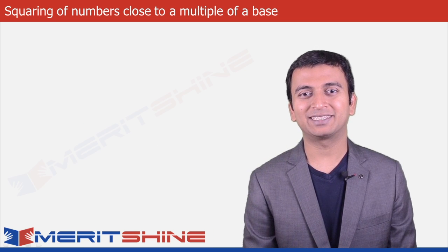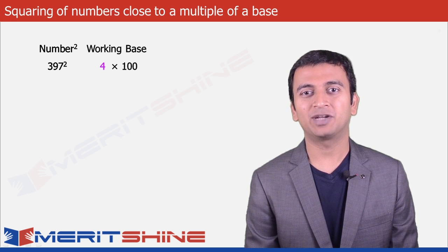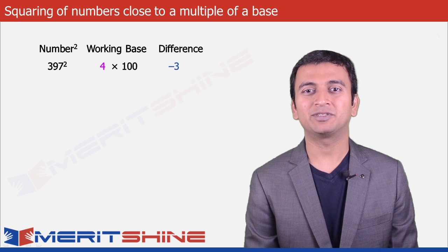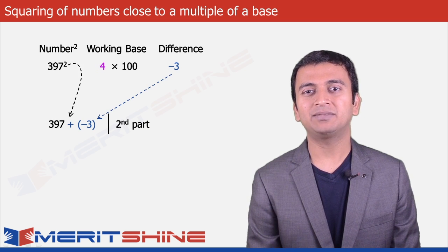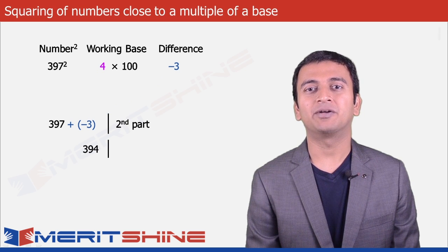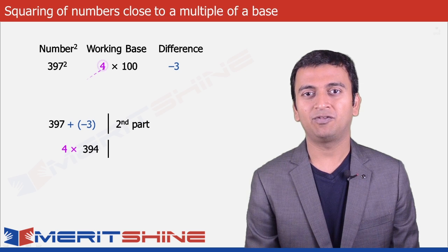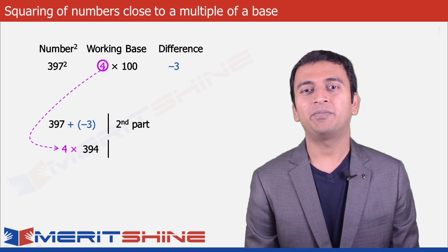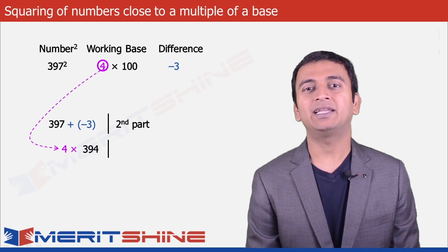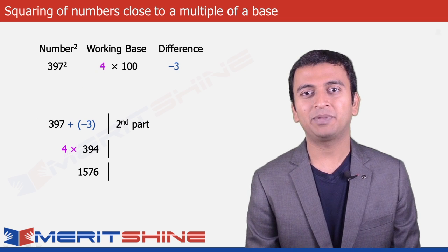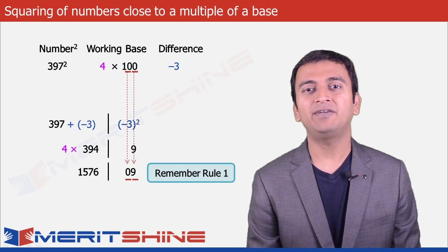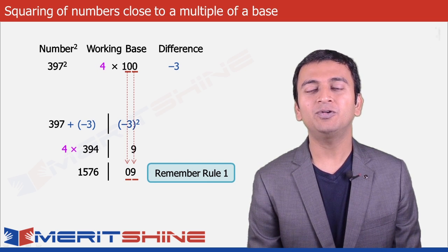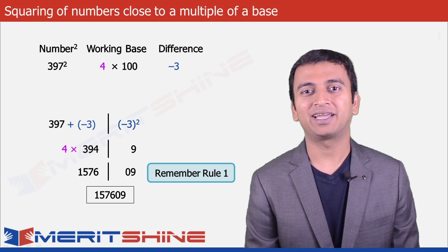Let us now try to find the square of 397. Here our working base would be 4 into 100 with 4 as our multiplier and the difference would be minus 3. The first part would be the number added to the difference, which is 397 plus minus 3 giving us 394. Since our multiplier is 4, we will have to multiply 394 with 4, which is equivalent to 4 into 400 minus 6, giving us 1600 minus 24 equals 1576 as the answer in the first part. The second part would be 3 squared giving us 9. Since we have two zeros in our working base we need two digits in the second part, so we add an extra 0 making it 09.